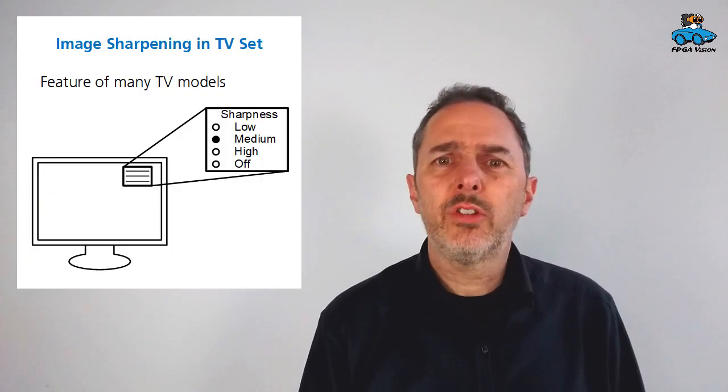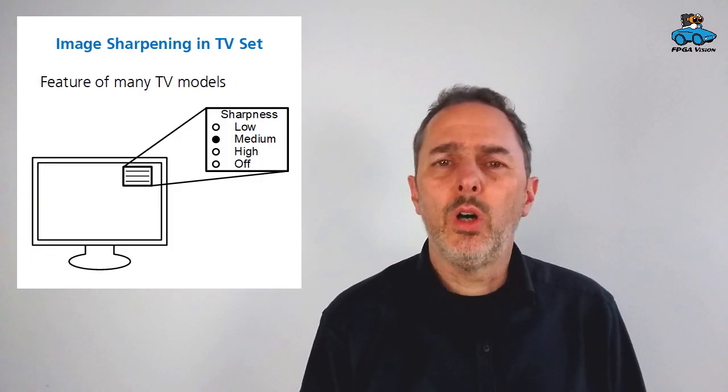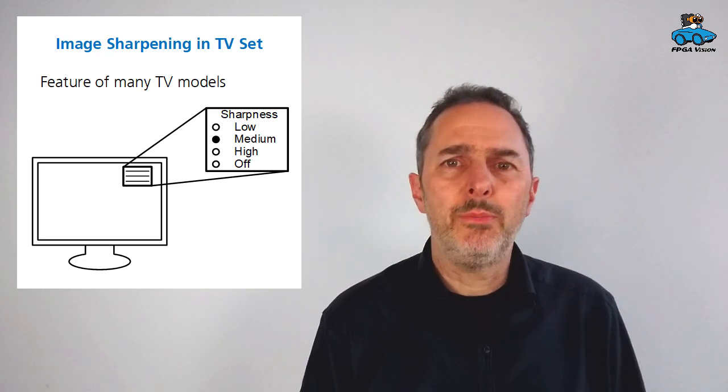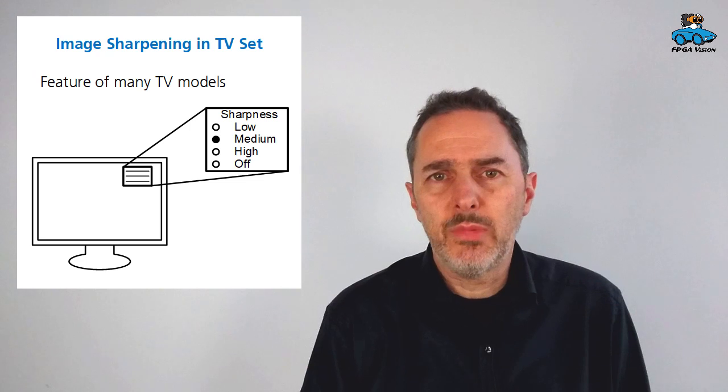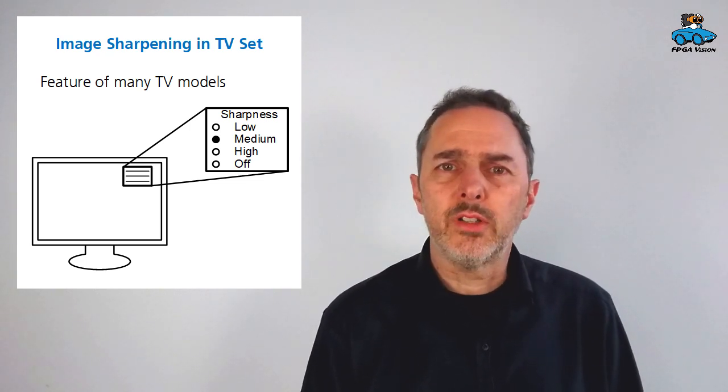The application is a modern TV set where you often find a feature like sharpness improvement. This sharpness improvement is implemented or can be implemented with an FIR filter. The lecture consists of several videos and in this video we will have a look at the algorithm development. So what is the algorithm for this FIR filter?